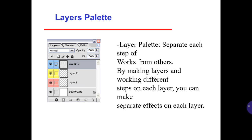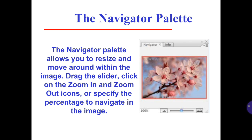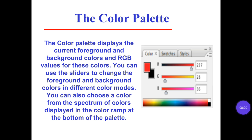You can make separate effects on each layer. The Navigator palette allows you to resize and move around within the image — drag the slider, click on the zoom in and zoom out icons, or specify a percentage to navigate within the image. The Color palette displays the current foreground and background colors and RGB values for those colors. You can use the slider to change the foreground and background colors in different color modes. You can also choose a color from the spectrum of colors displayed in the color ramp at the bottom of the palette.